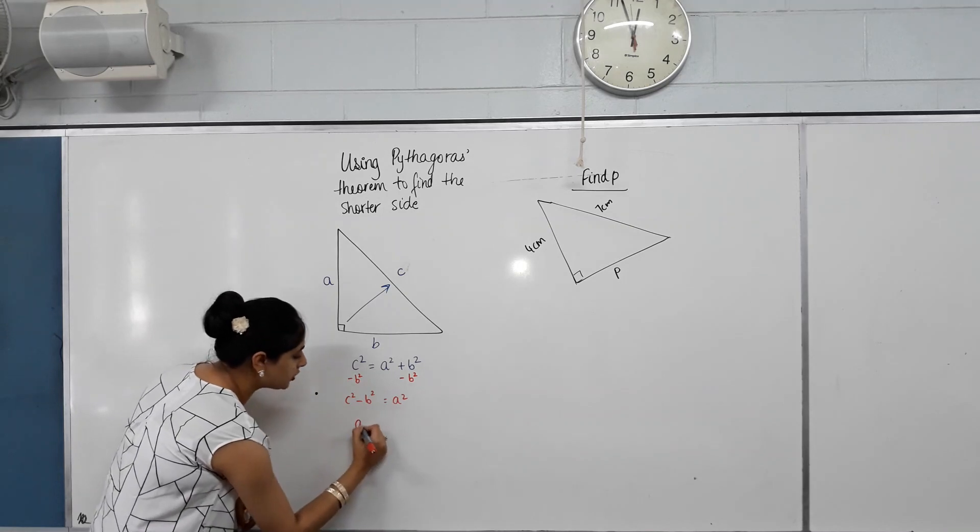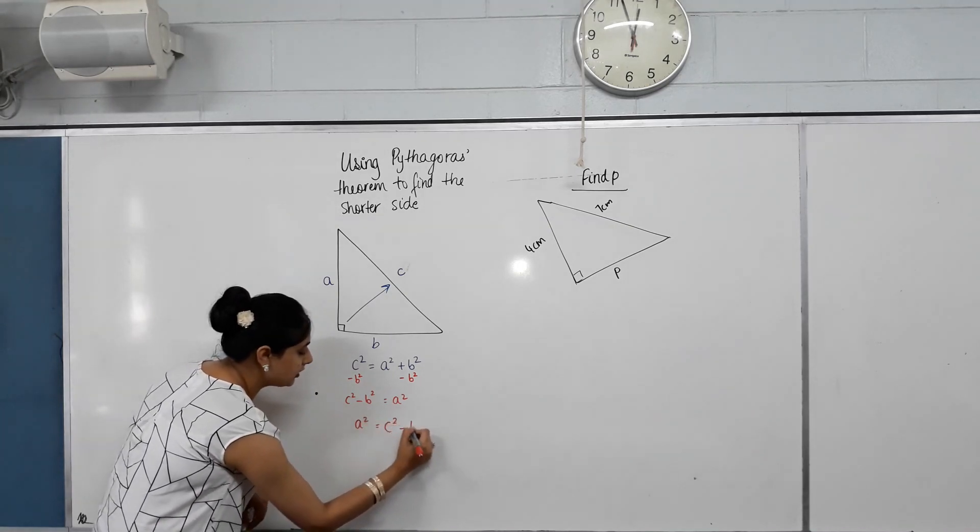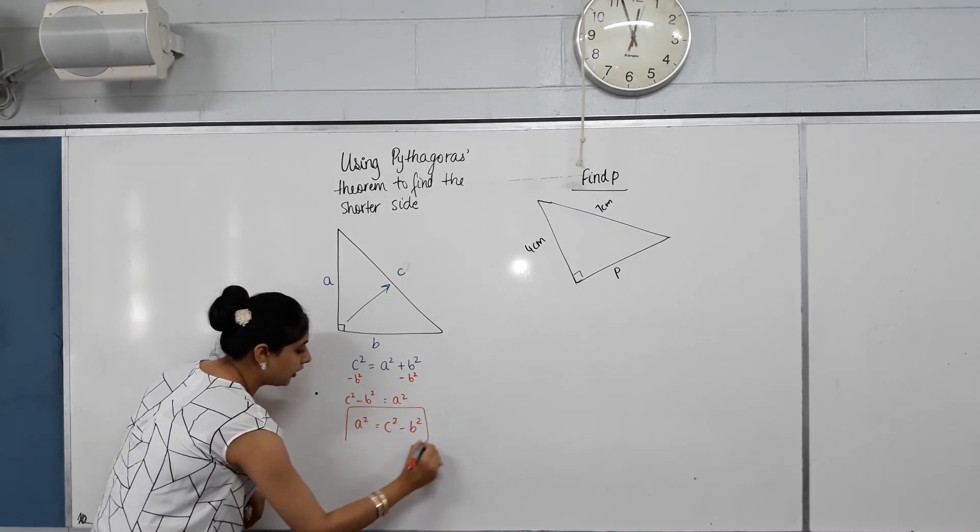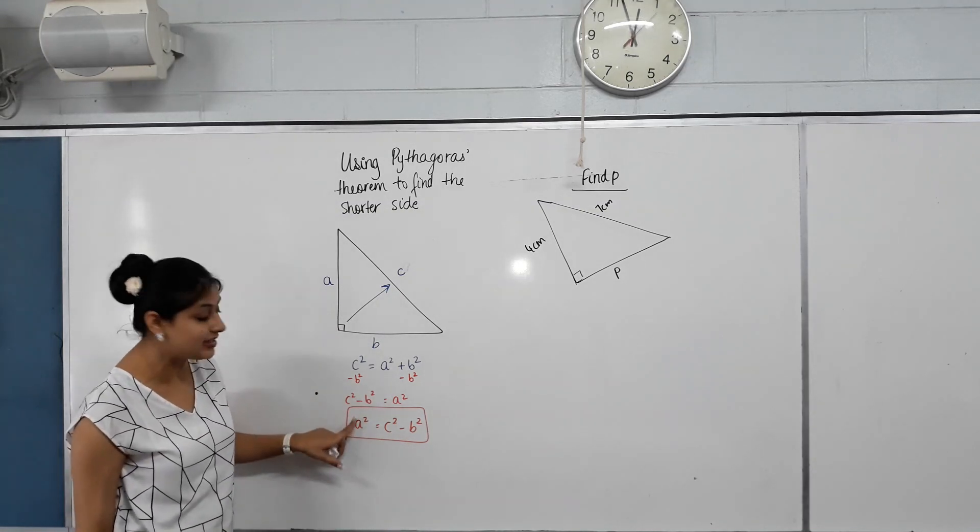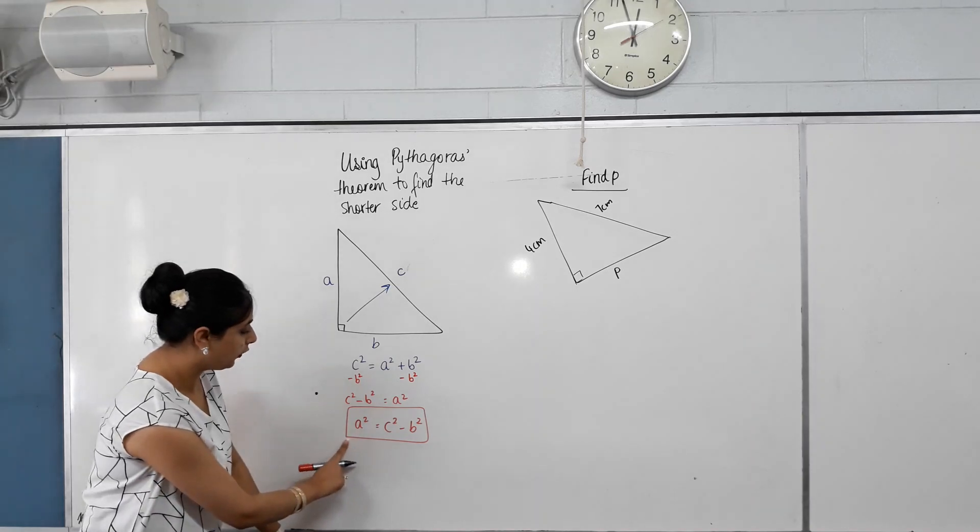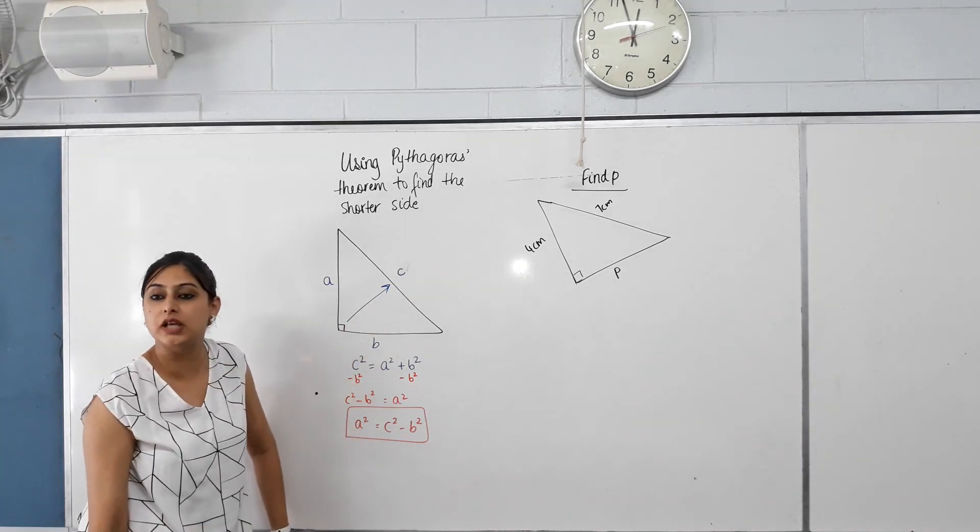Or I can write A squared equals C squared minus B squared. So this is how you find the length of the shorter side. If you label your missing side as A, you can use this rearranged formula to find the shorter side.